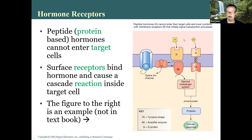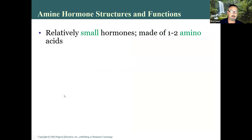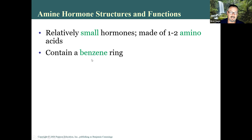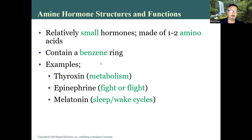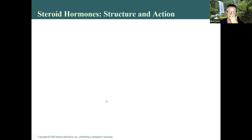Amine hormones are a class related to protein hormones but not normally considered protein hormones — they're very small, made of one or two amino acids, and always contain a benzene ring. Examples include thyroxin, involved in metabolism; epinephrine, also called adrenaline, the fight-or-flight hormone; and melatonin, involved in sleep-wake cycles. We'll be talking later about why taking melatonin as a supplement for sleep is not a good idea.